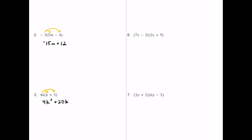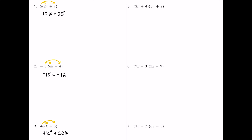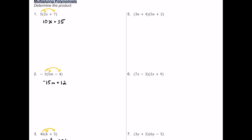For number five, we have a binomial multiplied by a binomial. Each term from the first binomial must multiply each term in the second. Starting with 3n: 3n times 5n equals 15n squared. Then 3n times positive 2 gives plus 6n.